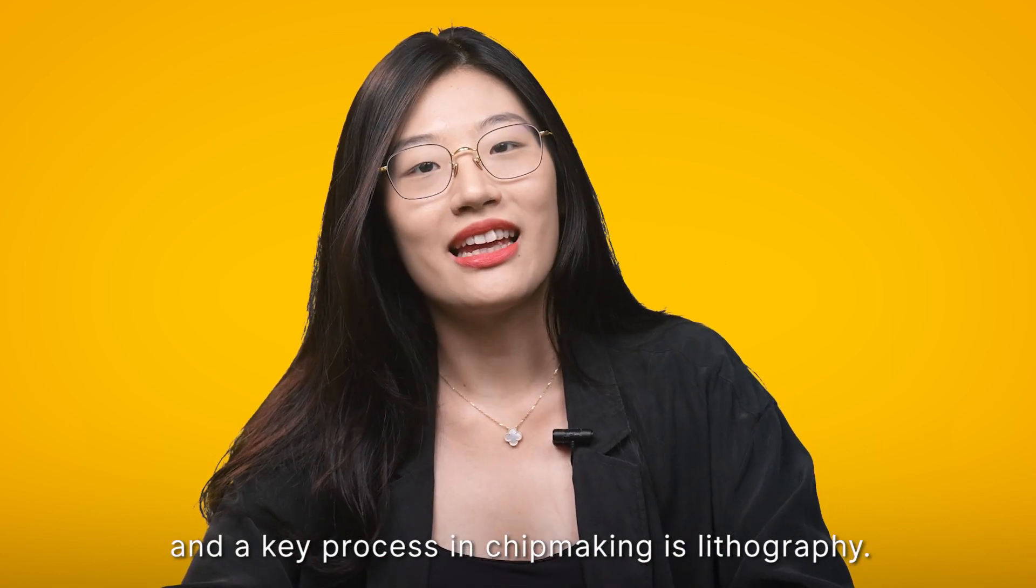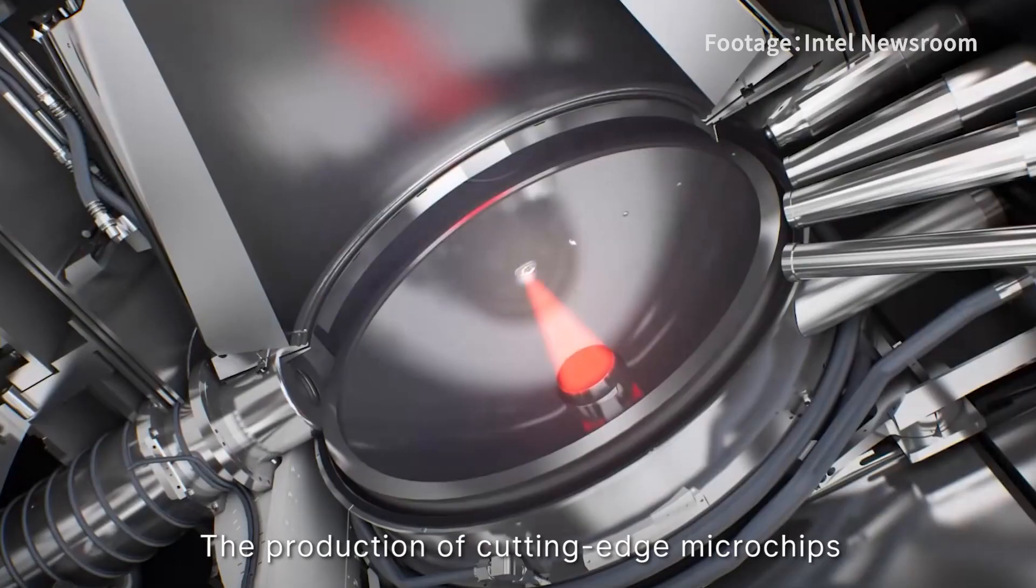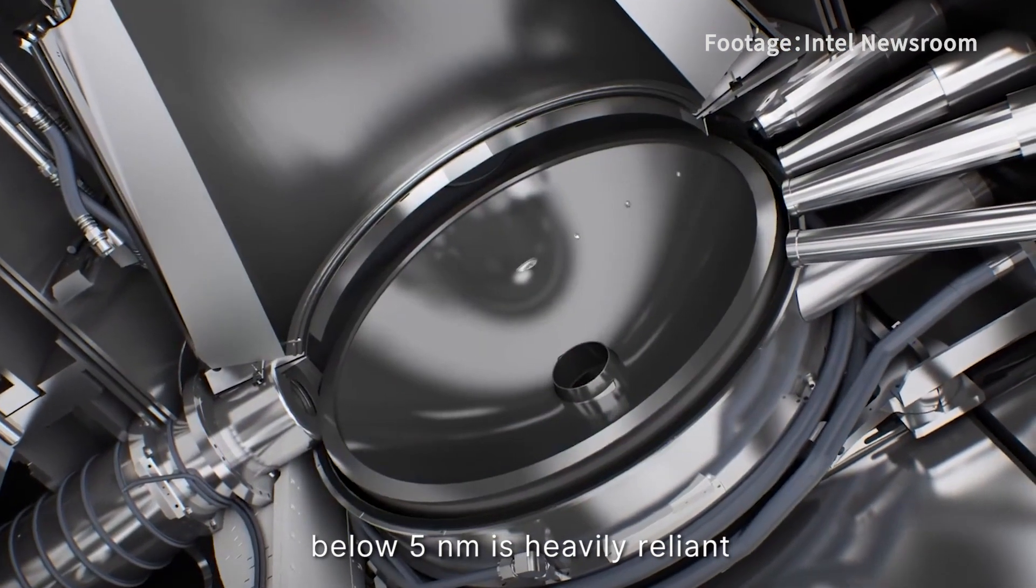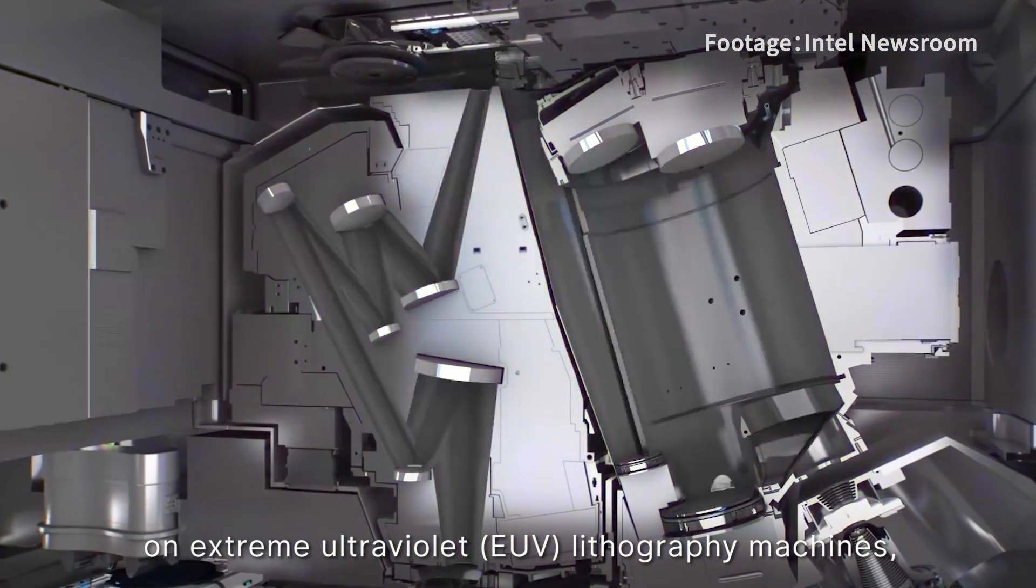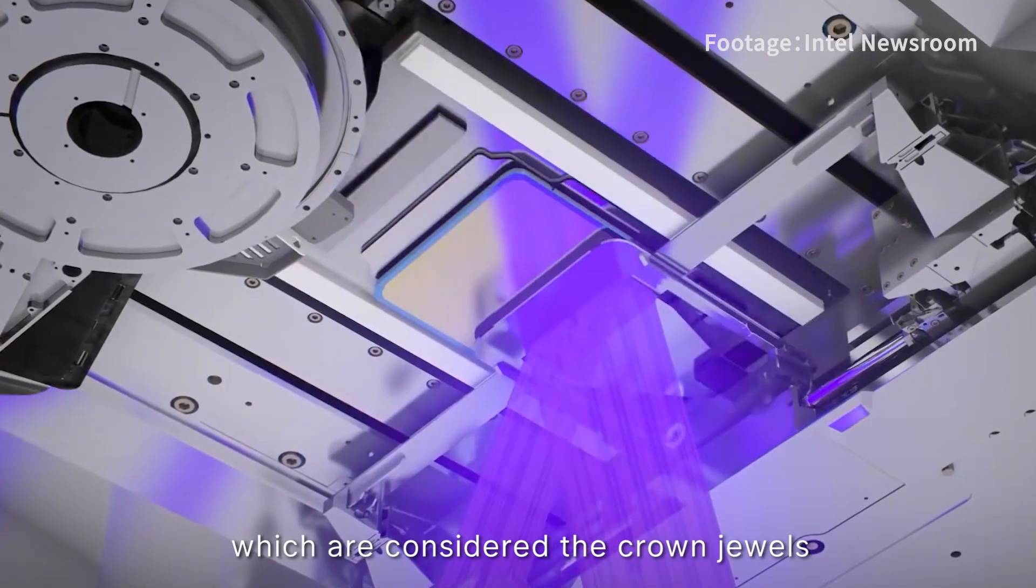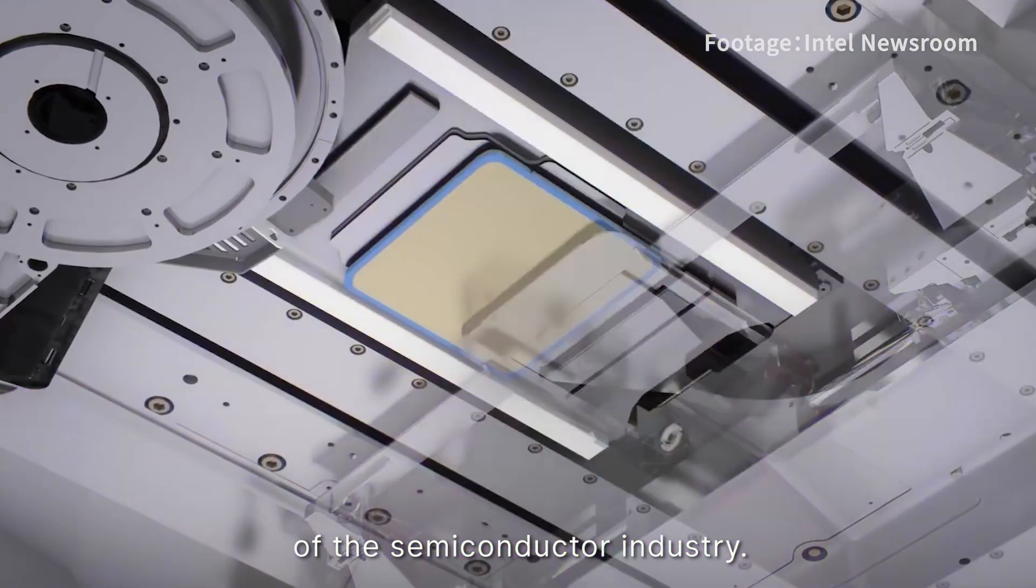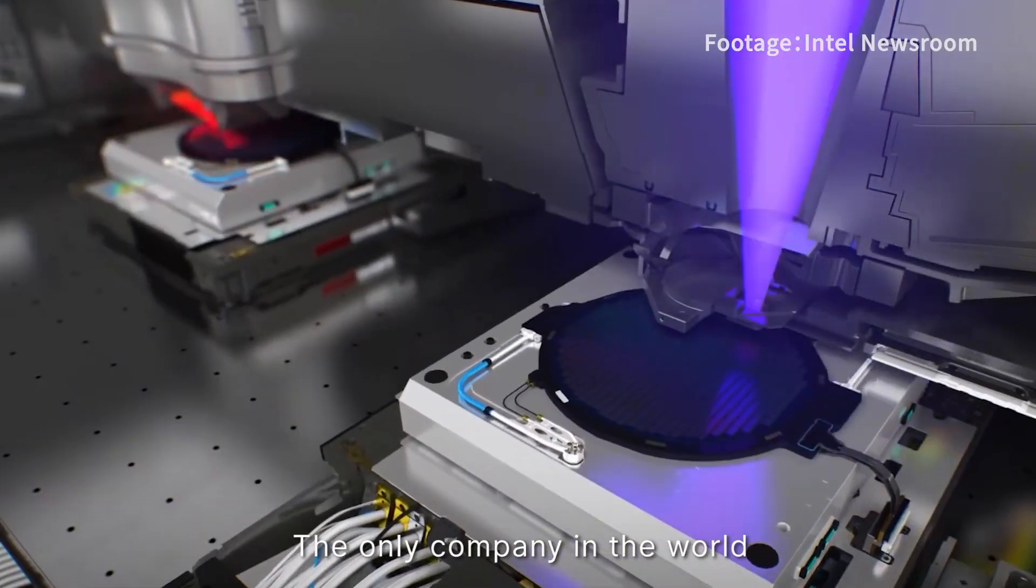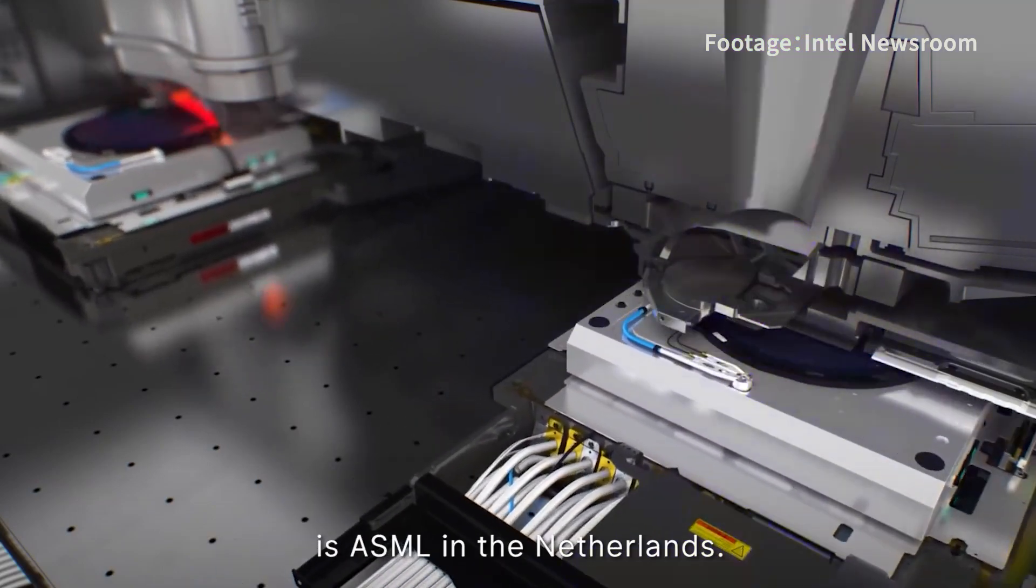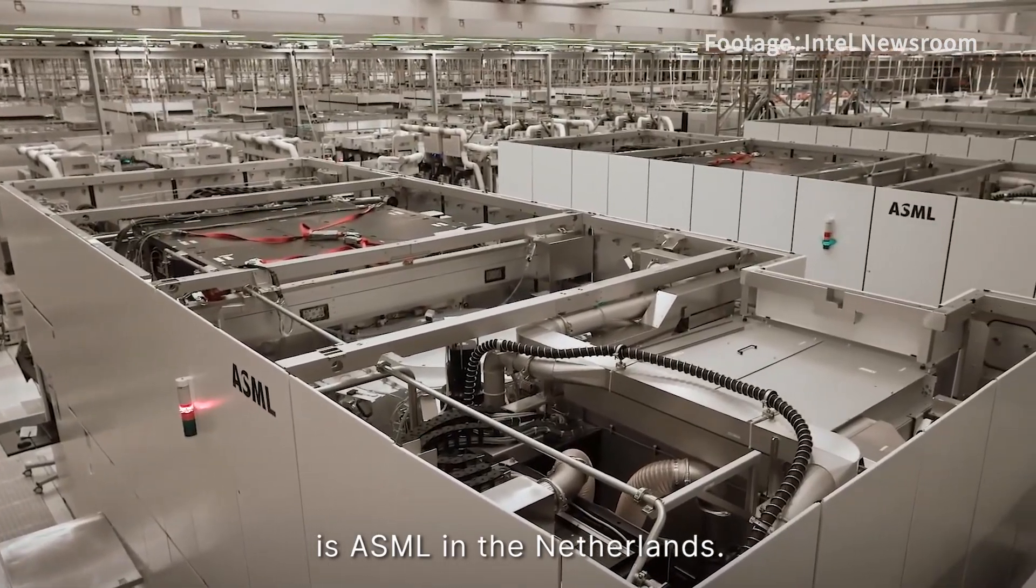A key process in chip making is lithography. The production of cutting-edge microchips below 5 nanometer is heavily reliant on extreme ultraviolet EUV lithography machines, which are considered the crown jewels of the semiconductor industry. The only company in the world that can produce EUV lithography machines is ASML in the Netherlands.